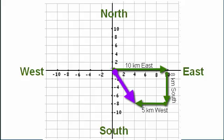In my example, the head-to-tail method has already been applied, so there's no need to reposition the vectors. Our final step requires that we calculate the magnitude of the resultant vector, and for that we apply Pythagoras' Theorem.